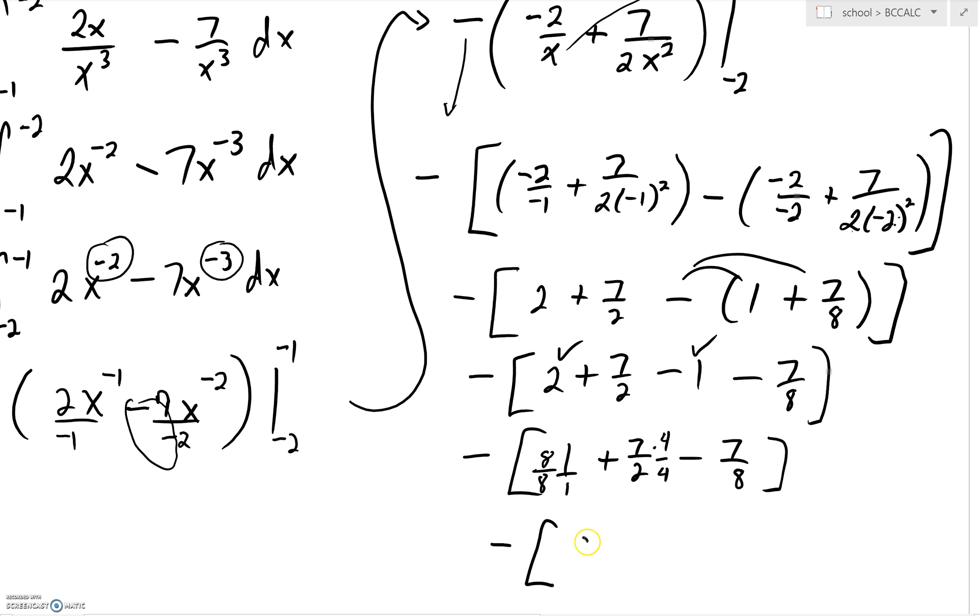And where are we going? Well, this is going to be 8 over 8 plus 28 over 8 minus 7 all over 8. And hopefully you can see this 8 and the negative 7 is a 1. 1 plus 28 is 29. So we get 29 over 8. But don't forget you've got that negative out in front. Final answer then is negative 29 over 8.